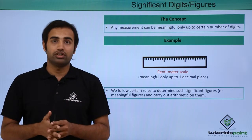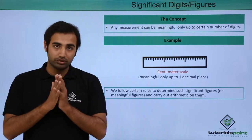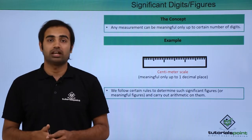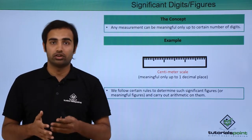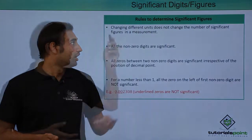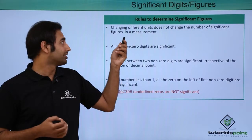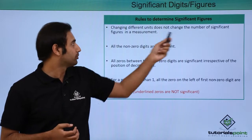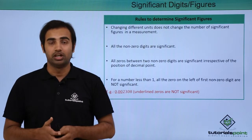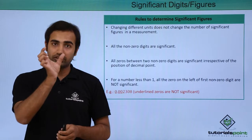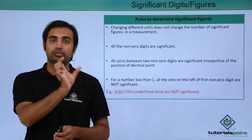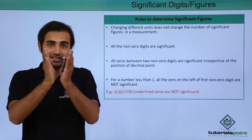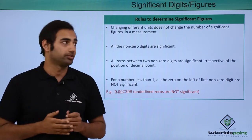First of all we will talk about the rules to determine significant figures in a measurement, and later on we will also do arithmetics on them. The first rule says that changing different units does not change the number of significant figures in a measurement. So if I convert a measurement in metres to centimetres, the number of significant digits in the measurement is not affected.